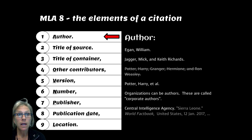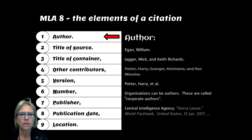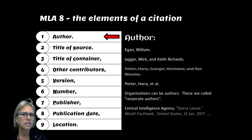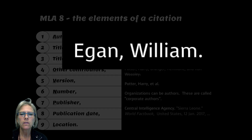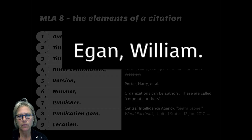The first of the nine MLA 8 elements is the author, and it hasn't changed significantly except for one minor thing, which I will explain shortly. Typically, author is last name first, comma, first name last, period — as in the Bill Egan example.